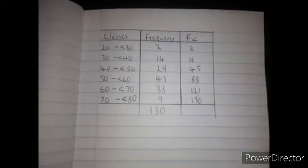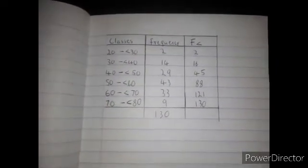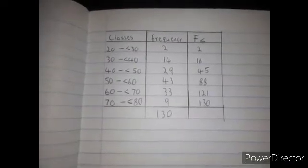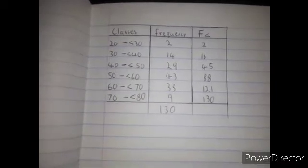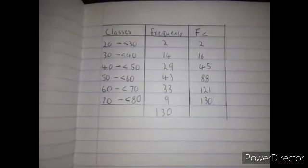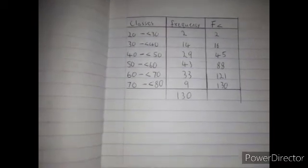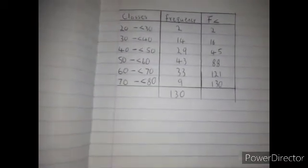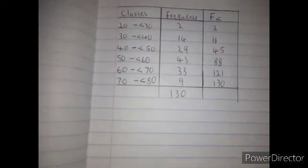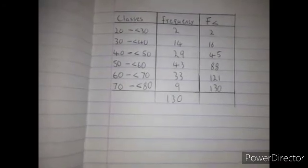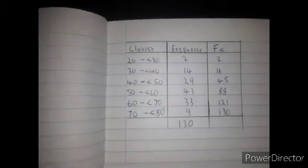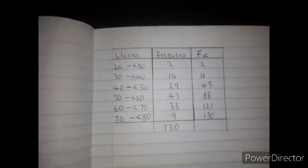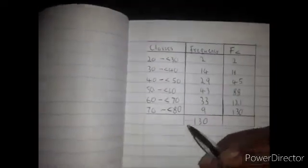If you don't know how to calculate the cumulative frequency, I already have a video for that, so I strongly recommend you watch that video. The second step is to identify the percentile interval by finding the first cumulative frequency that exceeds the percentile position. So how do you find the percentile position?